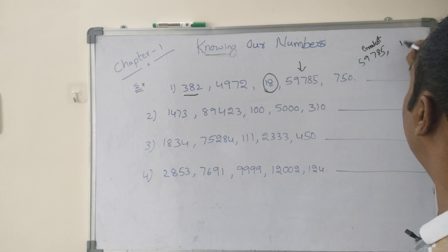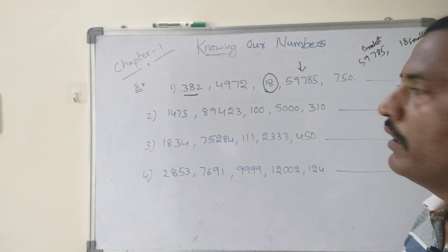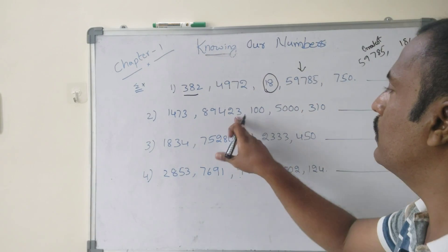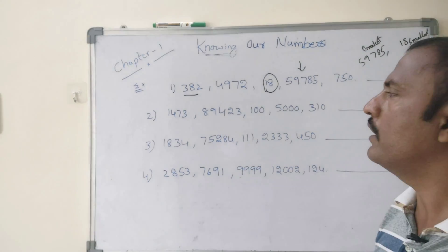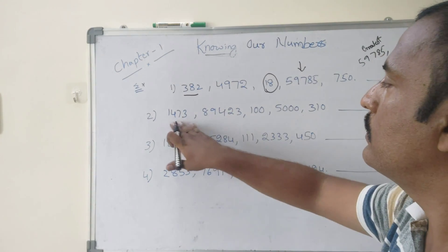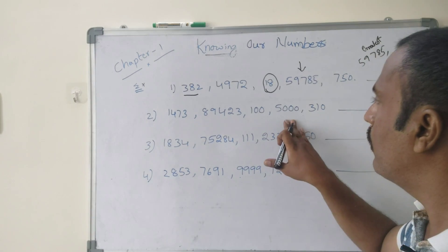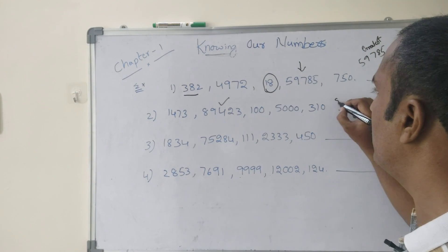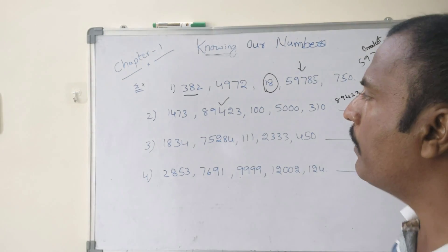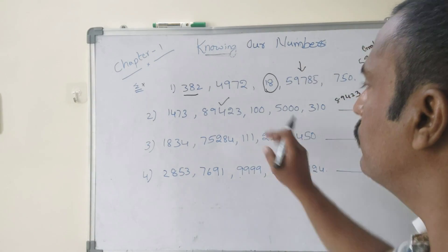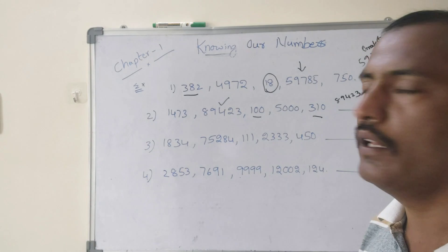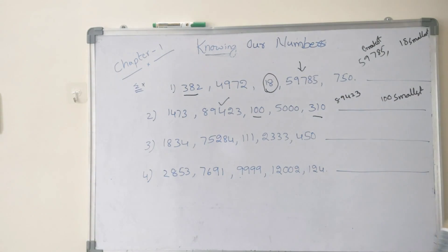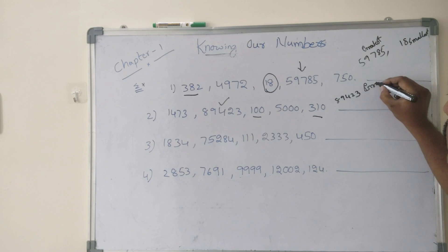18 is the smallest number. Next, the second example: 1473, 89423, 100, 5310. Here four digits, five digits, three digits, four digits — you can easily find out the greatest number. 89423 is the greatest number. 100 is the smallest number in this series.